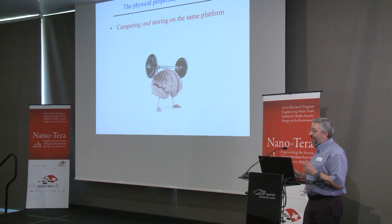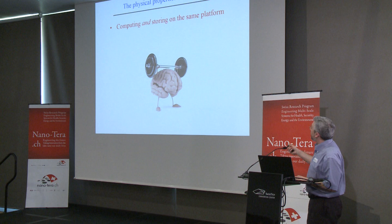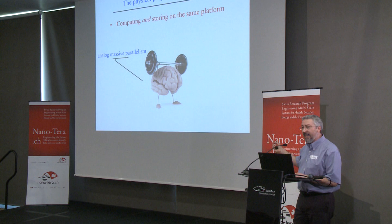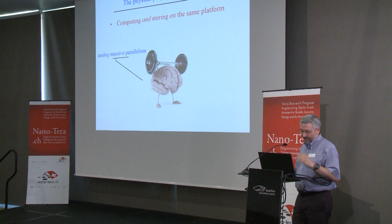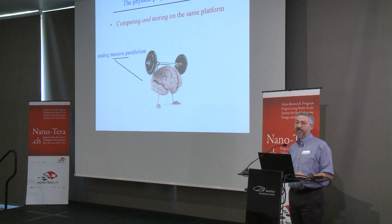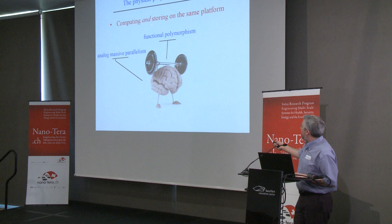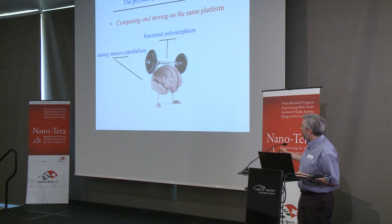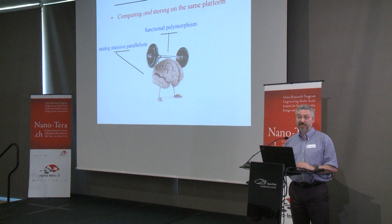The first feature is that there is no separate CPU and memory in the brain — it computes and stores information on the same physical platform. Second, it is massively parallel in a truly impressive way: I can look at the screen, move my hands, talk, and process a lot of information simultaneously. Third, it has functional polymorphism — it doesn't need to change the architecture to perform different functions, just different inputs.